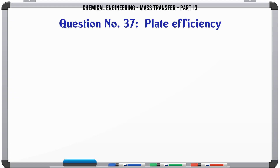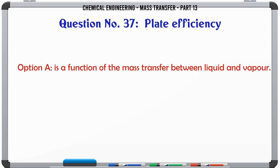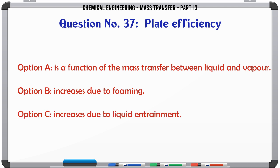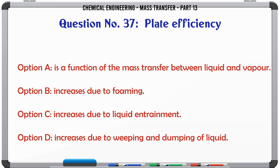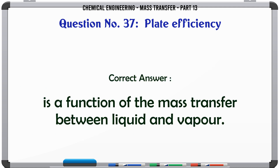Plate efficiency: A. Is a function of the mass transfer between liquid and vapor. B. Increases due to foaming. C. Increases due to liquid entrainment. D. Increases due to weeping and dumping of liquid. The correct answer is: Is a function of the mass transfer between liquid and vapor.